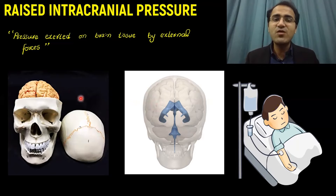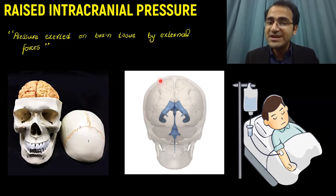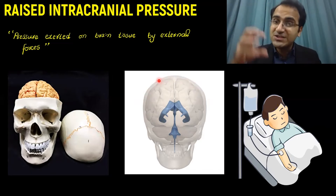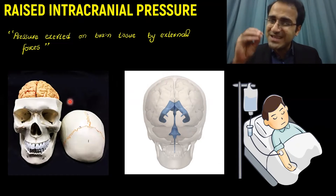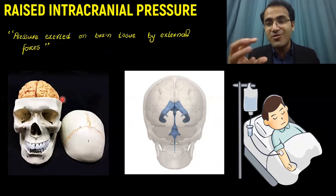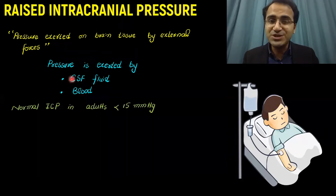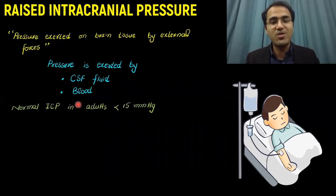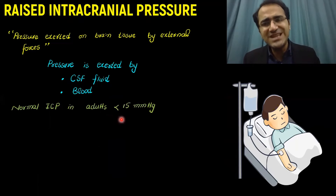Whenever there is trauma to the brain, it results in bleed around the brain, which exerts pressure on the brain. Any intracerebral hemorrhage or rupture of an artery can also cause accumulation of blood — a hematoma — resulting in increased intracranial pressure. So, pressure is exerted by CSF or blood. Normal intracranial pressure in adults is less than 15 mmHg.